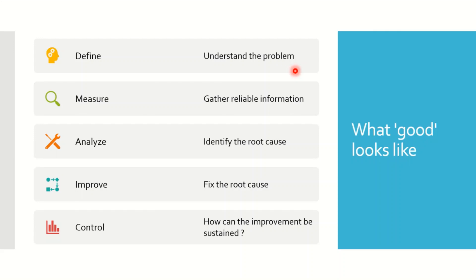Measure — you need to gather information. Whenever there is a failure, you need to check the calibration of the machines, the preventive maintenance of the machines, who the operators were and whether they are trained, and what materials were issued and run in the machines. You need to check everything within the scope of the investigation. Then move to the Analysis phase, where you evaluate the root cause.